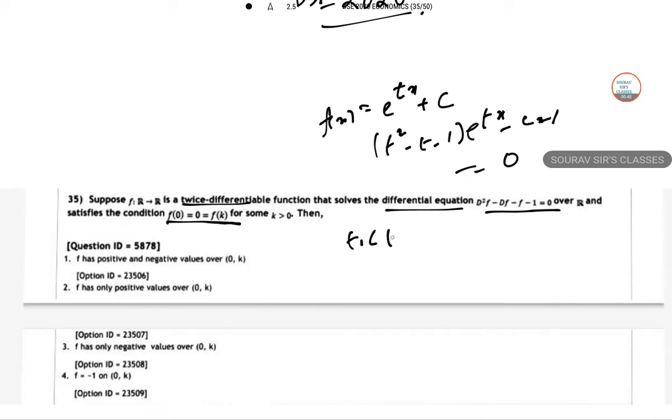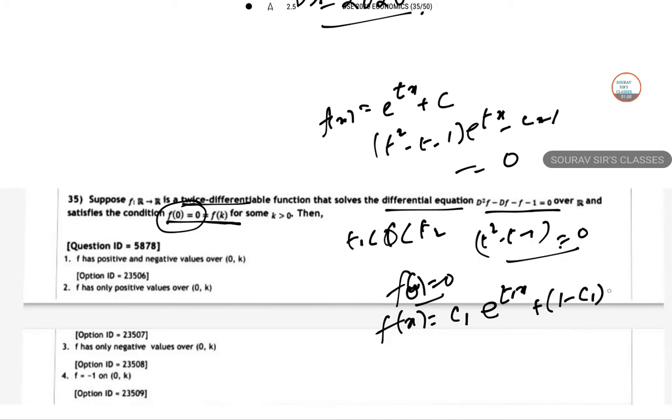So now t1 < 0 < t2 if we take. Then the two roots t² - t - 1 = 0. So also using f(0) = 0 from this part we can get that f(x) = c1·e^(t1x) - c1·e^(t2x) - 1.